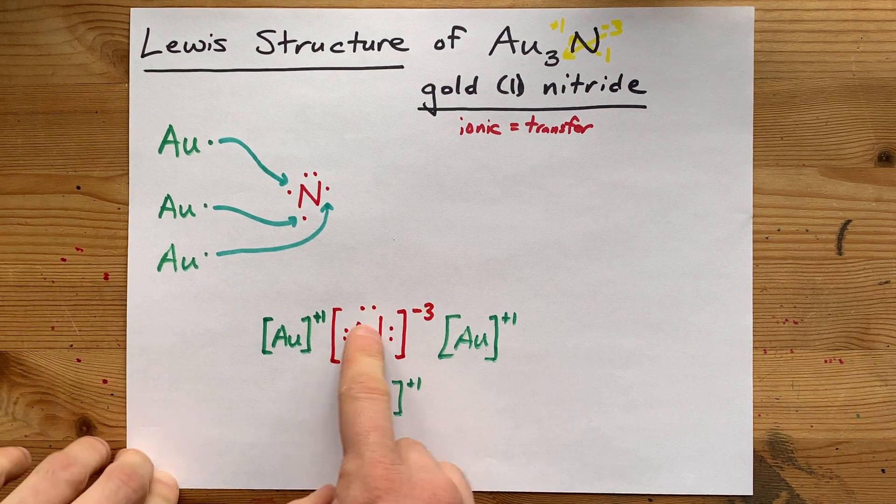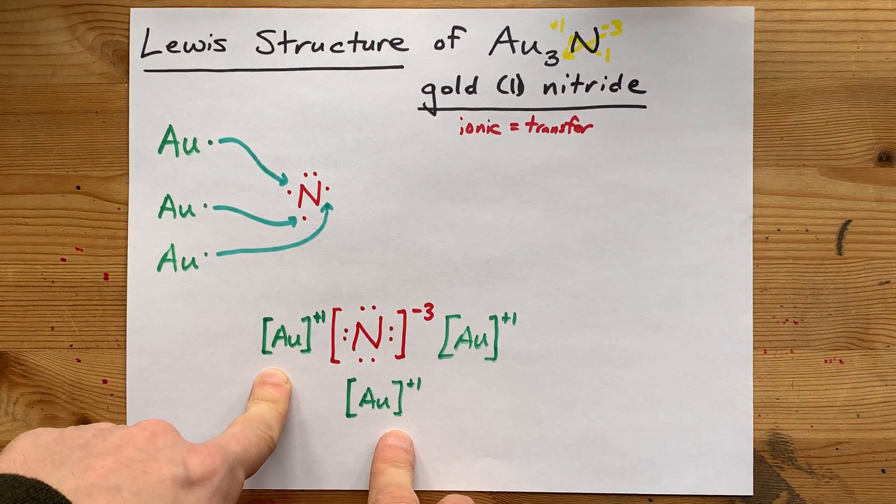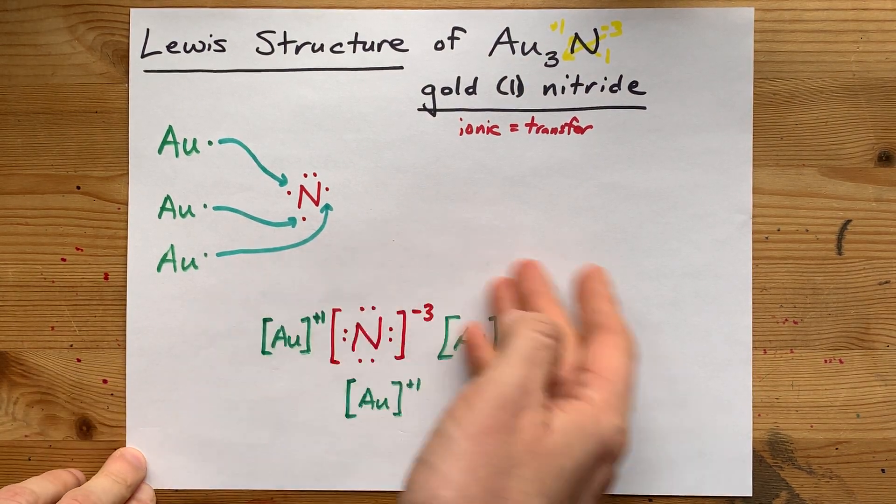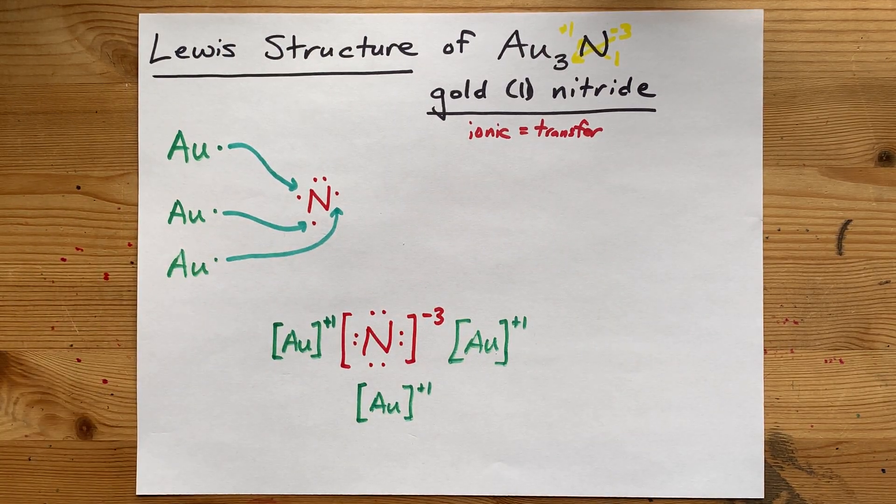You got the nitride ion here, and three AU3 gold atoms as well. There you go. I did it, you did it. Congratulations, and best of luck.